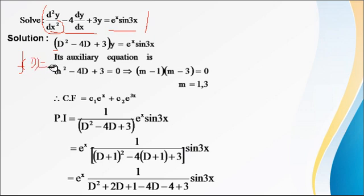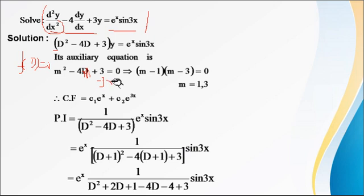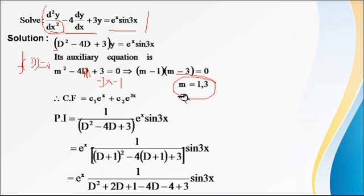The auxiliary equation is m² − 4m + 3 = 0. Factoring: (m−1)(m−3) = 0, giving m = 1 and m = 3. These two roots are real and distinct, so CF = c₁e^x + c₂e^(3x).